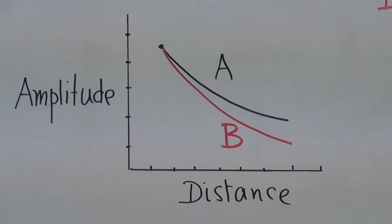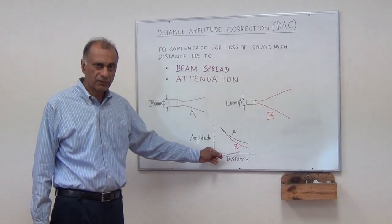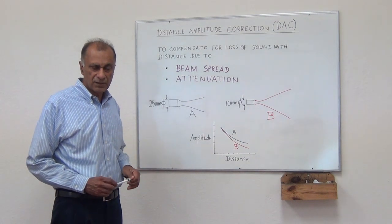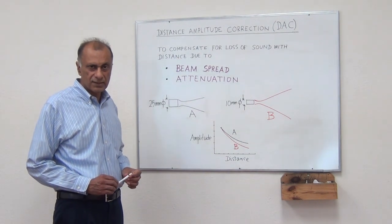In this case, you will see a sharper drop in the signal amplitude with distance. I will give you a demonstration of the DAC curve on some flat bottom holes using a single probe.